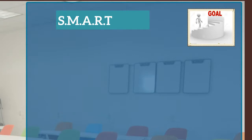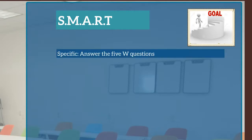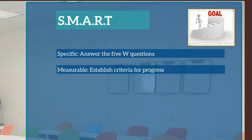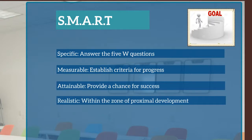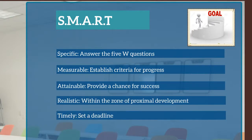Another way to write an outcome is to write a SMART outcome. SMART outcomes are specific — they answer the five W questions: who, what, when, where, why. They are measurable, so they establish criteria for progress. They are attainable, providing a chance for success. They are realistic, within the zone of proximal development. And they are timely — they set a deadline, such as by the end of the lesson, by the end of the unit, or by the end of the year.